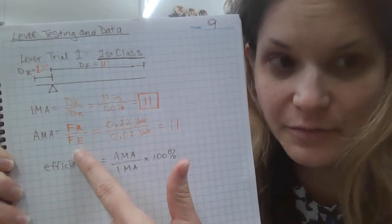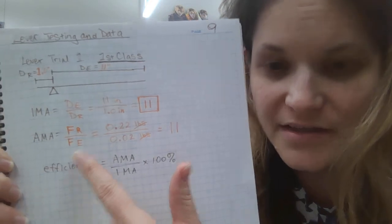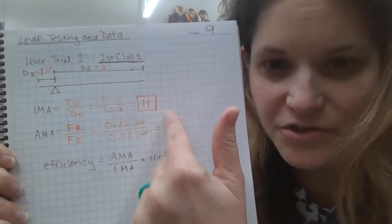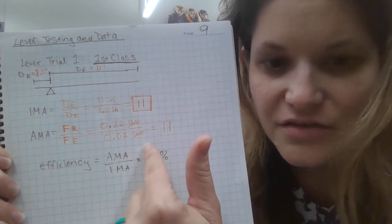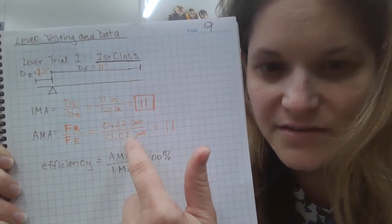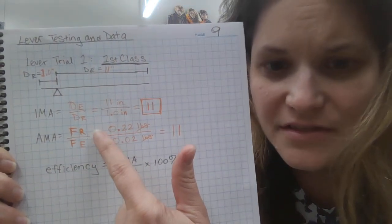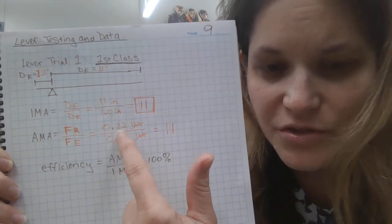Down here. Okay. Part of the problem with measuring force was I wasn't able to be quite as precise as I was with my ruler measuring these distances. So I actually only ended up having one sig fig for this value here. My resistance force, that was 0.22 pounds.